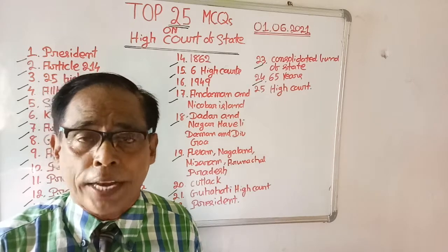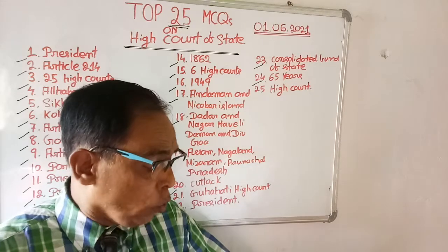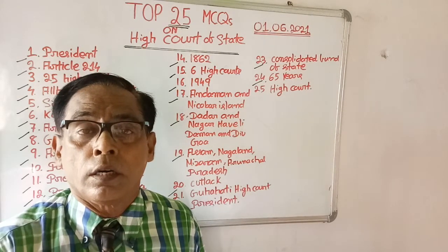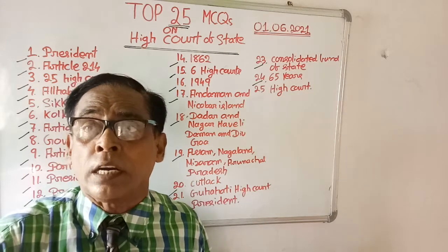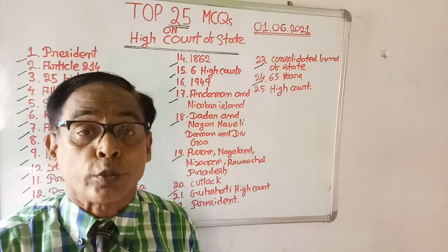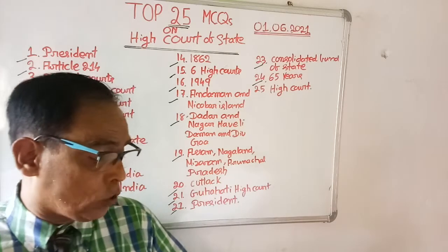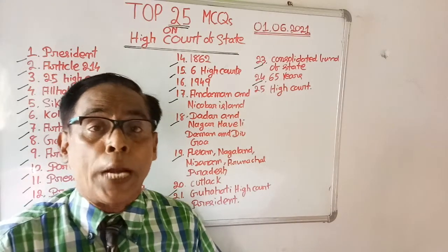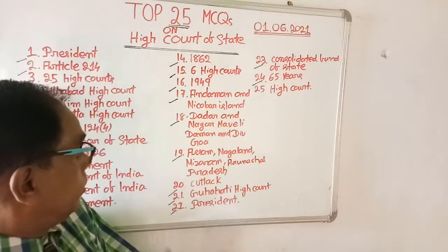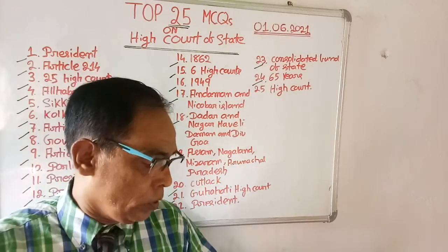Question number twenty-one: which High Court has the largest jurisdiction? Options are: Gauhati High Court, Odisha High Court, Calcutta High Court, and Bombay High Court. The right answer is Gauhati High Court — it has the widest area of jurisdiction.